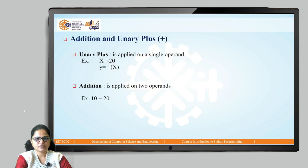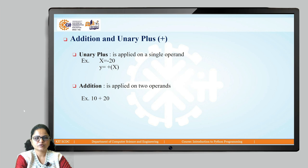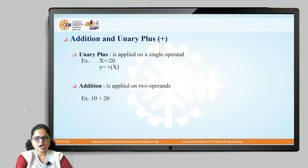The first one is the addition operator. We can use plus as a unary plus — applied on a single operand. For example, given x equals minus 20, we assign y equals plus x. You can precede your number with a plus sign to define it as a positive number. Also, we can use the plus operator to perform addition on two operands — it is a binary operator. For example, 10 plus 20 uses plus to perform addition.